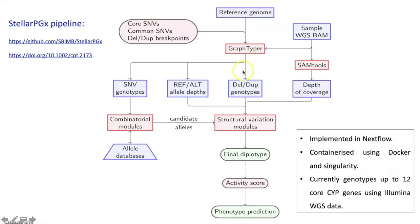Accurately detecting the variants is just halfway the journey. We still need to phase those variants into haplotypes and then into diplotypes. Instead of a statistical phasing approach, we built a database based on the PharmVar consortium catalogs. With that database, we are able to use a combinatorial approach to phase the different variants. We also use the depth of coverage to determine the structural variation in a sample.